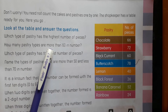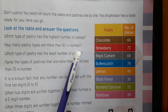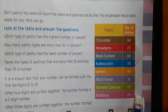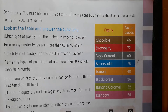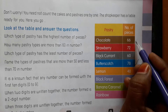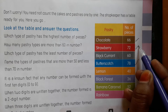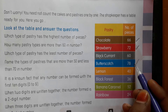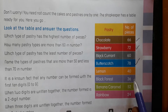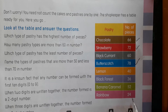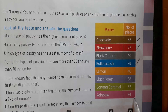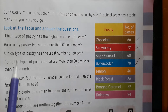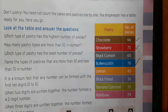How many pastry types are more than 60 in number? Look here. 66 — is it more than 60? Yes. 72 — more than 60. 60 — it is equal to 60, not more than. 78 — yes, it is also more than 60. 40, 36, 52, 24 — these are less than 60. So, 3 types of pastries are more than 60 in number.